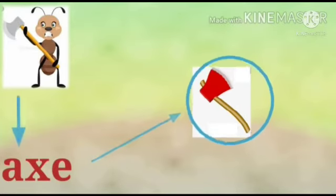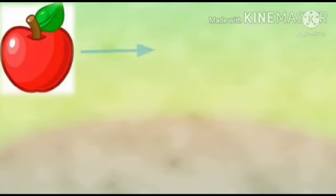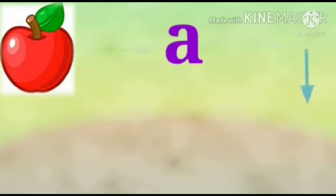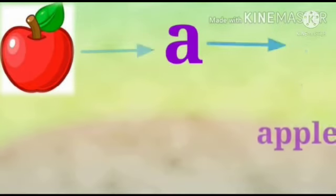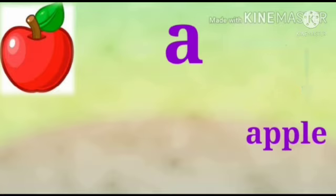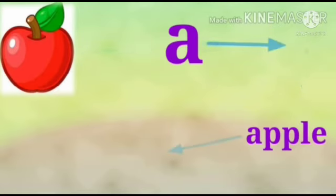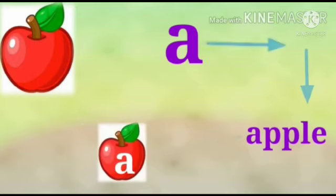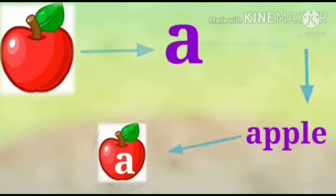There is a very pretty apple. The spelling of 'apple' is A-P-P-L-E. The word 'apple' starts with A, that's why we are going to circle the apple.